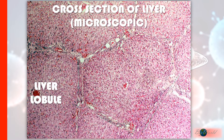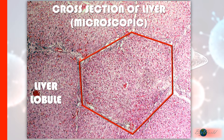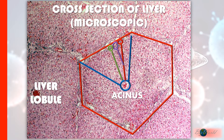Liver tissues are arranged in structures called lobules. In this microscopic image of a cross section of the liver, the liver lobule is very clear. Inside this liver lobule, there are smaller structures called the acinus. The acinus contains a central vein, and on the far end we will have another three vessels.